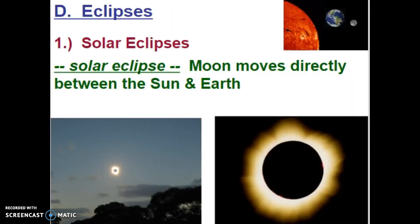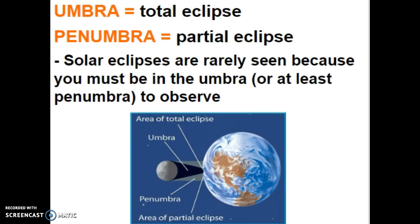Because of the positions of the Sun, Moon, and Earth, sometimes we see interesting phenomena. A solar eclipse is when the Moon moves directly between the Earth and the Sun, blocking the sunlight. The area of total eclipse — the darkest part of the shadow — is called the umbra, and the area of partial eclipse is called the penumbra. Solar eclipses are rarely seen because you have to be in the umbra or penumbra to observe one; outside those areas it looks like a regular day.